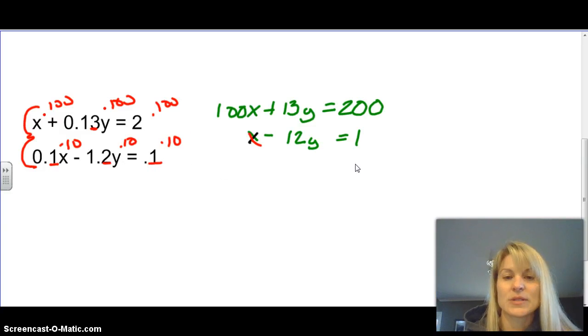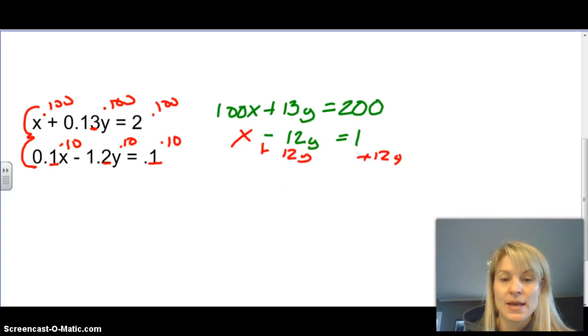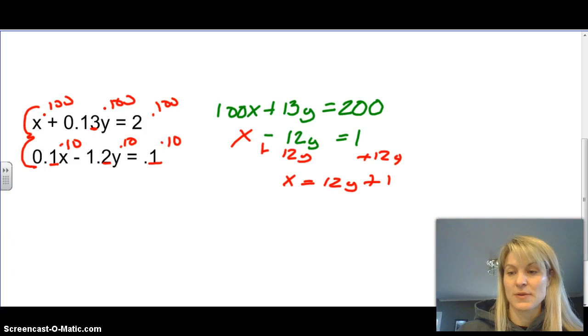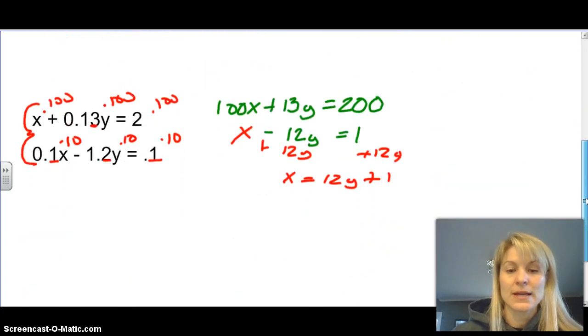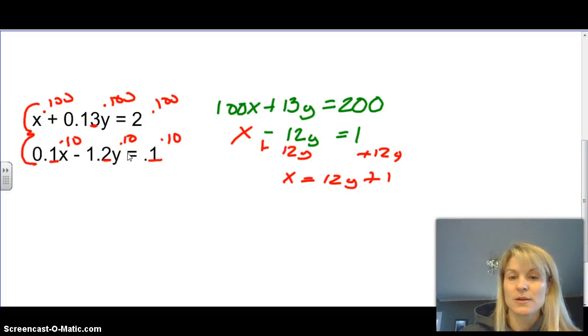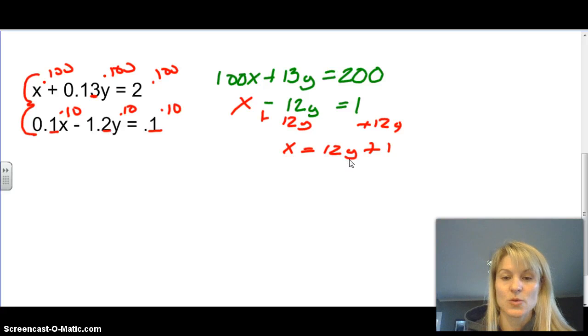So here we can also make this into a substitution problem. Very simply, x has no coefficient. It just has 1. So that makes it an easy target to change into substitution, because what you're really looking for is, is there a variable that you can get by itself pretty easily. So for this one, all I have to do is add 12y to this side, and then I have x equals 12y plus 1. So I isolated the variable by itself. In the first example, it was already isolated. y was already equal to 4. And this one, I had to isolate it by just adding 12 to that side. So now here, I'm saying x is equivalent to this 12y plus 1.